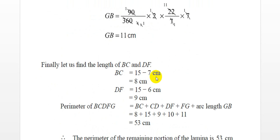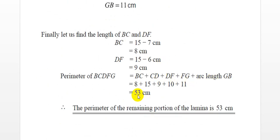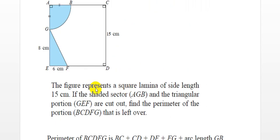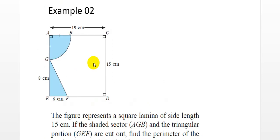The summation of all lengths gives the perimeter of the figure BCDFG: 8 + 15 + 9 + 10 + 11 = 53 centimeters. Therefore, the perimeter of the remaining portion of the lamina is 53 centimeters. This is how you calculate the perimeter of a plane figure which consists of combined figures — in this example, one sector and one triangle are attached to a square.